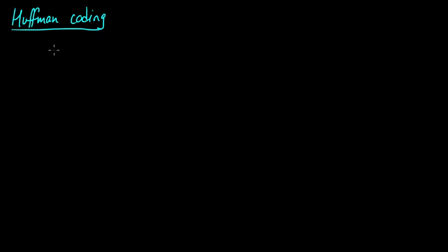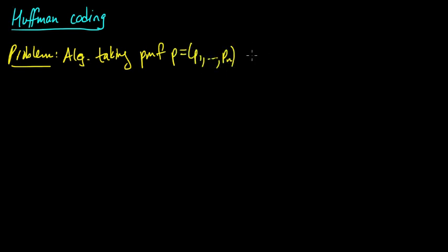Here optimal means minimal expected length. So the problem is to design an algorithm taking any PMF P, maybe P1 up to Pn, and producing an optimal symbol code on the set 1 to n with respect to this P in the sense that it has minimal expected length.